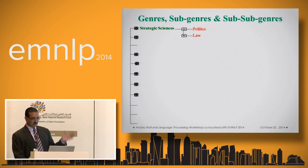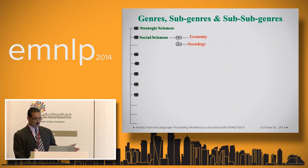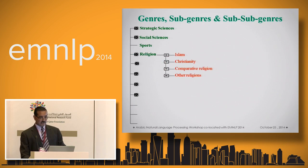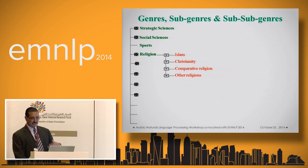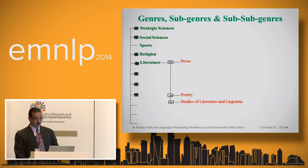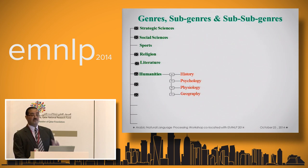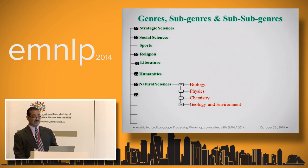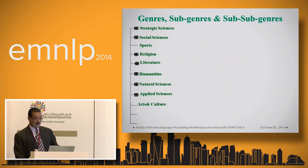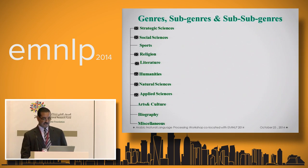For genres, according to Dewey, we have strategic sciences, politics and law, social sciences, economy and sociology, sports and religion — including Islamic, Christianity, comparative religion, and other religions. We also have literature including prose, poetry, and linguistic studies, sub-classified into novels and so on, until we have a very detailed classification of all genres that can be detected in order to have good coverage as far as Dewey is classified.